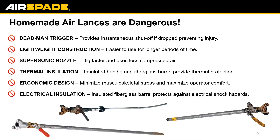One thing we like to educate people on is the dangers of homemade air lances. The Air Spade 4000 features a dead man trigger, whereas a traditional homemade air lance only has a ball valve, which is very dangerous as it's always left open and on. If that unit is dropped, it could cause flailing, leading to damages or significant injuries. The Air Spade is also thermally insulated — homemade blow pipes are typically all metal, and compressed air runs very hot, creating a burn risk and discomfort. With metal, there's also no electrical insulation. All in all, our product is much more efficient, cuts down on expensive compressed air costs, and keeps users much safer.